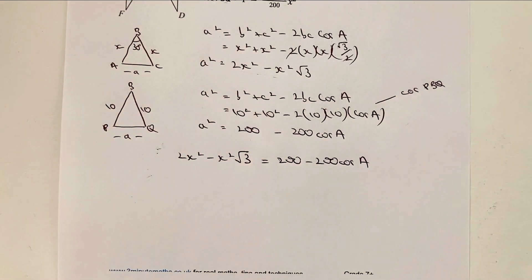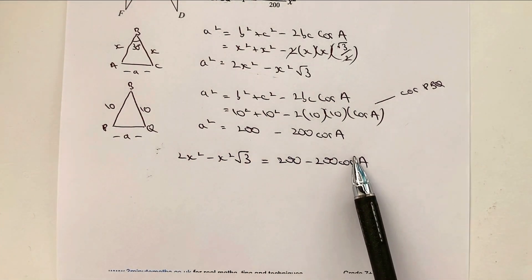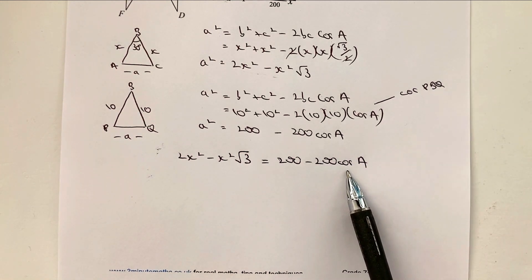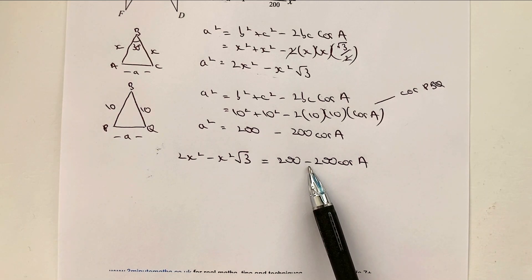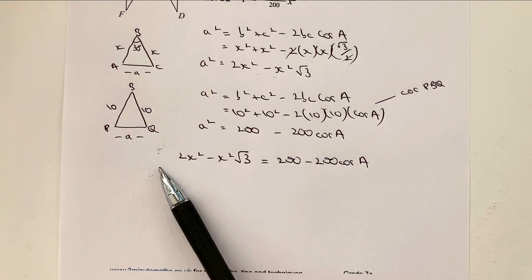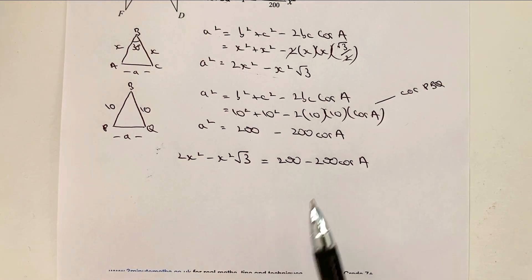All right. Now, I need to make this 200 cosine A the subject of the formula. Now, the problem I've got at the moment is it's got this awful minus sign. So the first thing I'm going to do is I'm going to move it over to the left-hand side here. I'm going to add it to both sides.